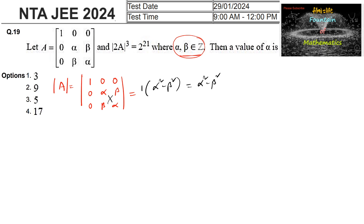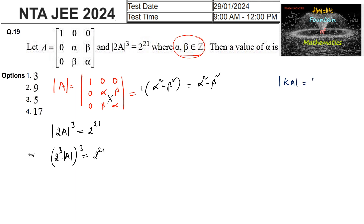Since det(2A)³ = 2²¹, we apply the property det(kA) = kⁿ · det(A), where n is the order of the matrix. Here the matrix is 3×3, so det(2A) = 2³ · det(A), and therefore (2³ · det(A))³ = 2²¹, giving 2⁹ · (det A)³ = 2²¹.